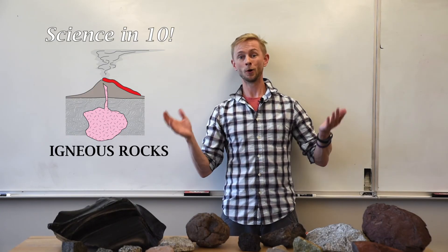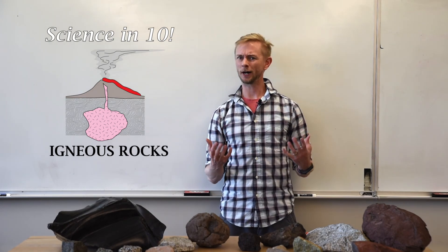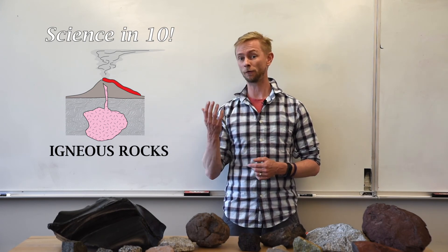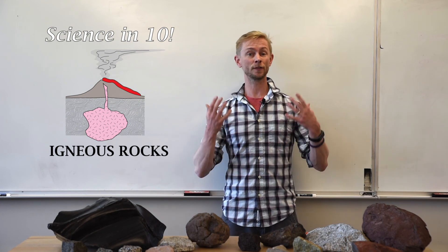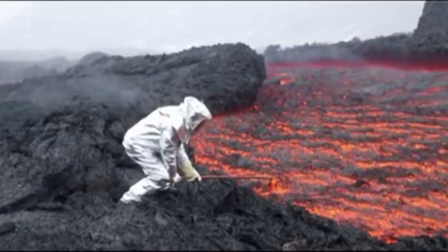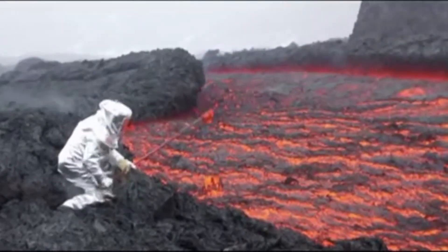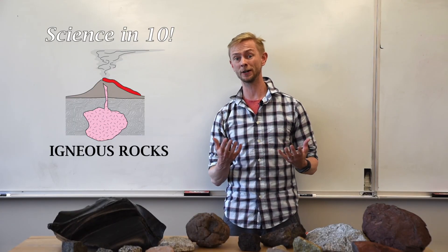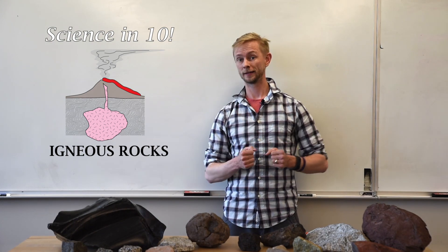So there we go — rocks born of fire. What's pretty cool is that igneous rocks are likely the very first type of rock to form on Earth, about four and a half billion years ago. And igneous rocks are also the youngest rocks on Earth, with extrusive rocks forming right now. Though, considering the temperature of these baby rocks is probably around a thousand degrees Celsius or 1,800 degrees Fahrenheit, I really wouldn't want to go pick one of them up for a while. Catch you next time!